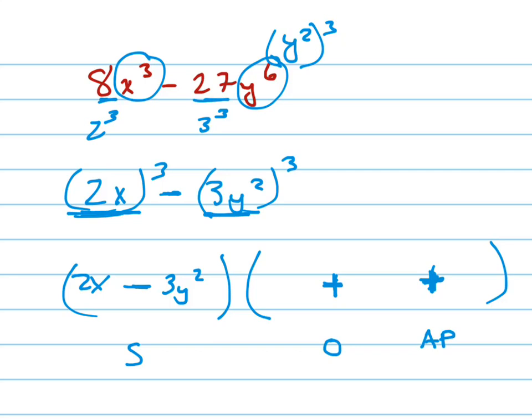But then I'm going to square it here, so it's 4x squared, and this one is not double, it's squared. 9y to the 4th, because I'm squaring it. And then the middle here is that times that times 2. So 3 times 2 is 6 times 2 is 12.